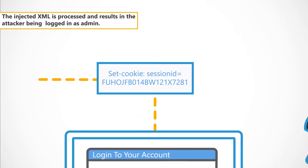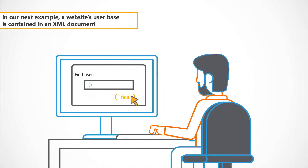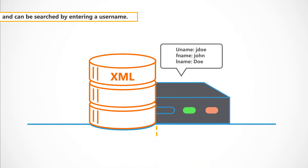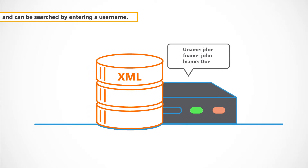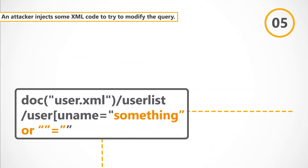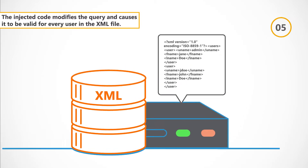The injected XML is processed and results in the attacker being logged in as admin. In our next example, a website's user base is contained in an XML document and can be searched by entering a username. An attacker injects some XML code to try to modify the query.